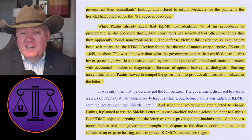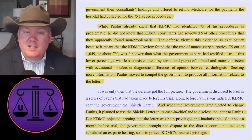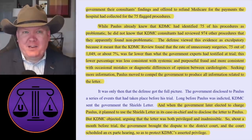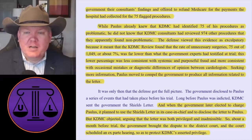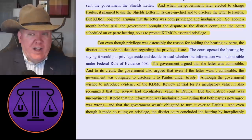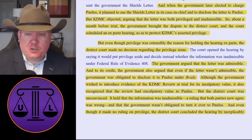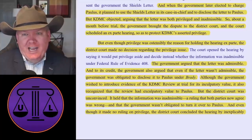The defense viewed this evidence as exculpatory because it meant that the medical center's review found that the rate of unnecessary surgeries — 75 out of 1,049, or 7% — was far lower than what the government's experts had testified at trial. This lower percentage was less consistent with a systemic and purposeful fraud and more consistent with an occasional mistake or a diagnostic difference of opinion between cardiologists. Seeking more information, Paulus moved to compel the government to produce all information related to the letter. When the government later elected to charge Dr. Paulus, it planned to use the so-called Shields letter in its case-in-chief, but the medical center objected, arguing the letter was both privileged and inadmissible.